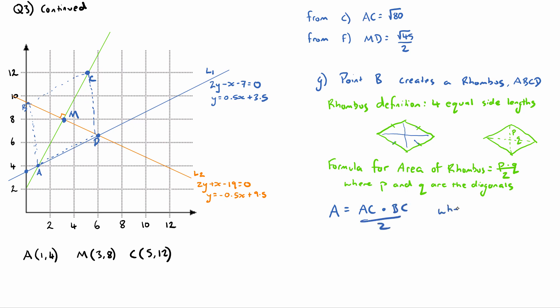where AC and BD are diagonals of rhombus ABCD. We found in Part C that the distance from A to C is √80, and we were told just prior in question F that the distance MD is √45/2.